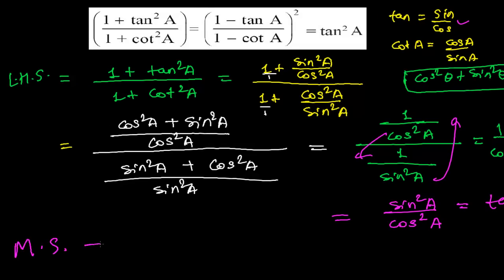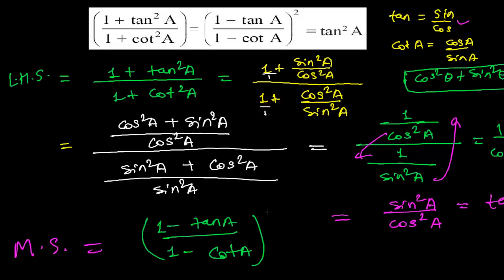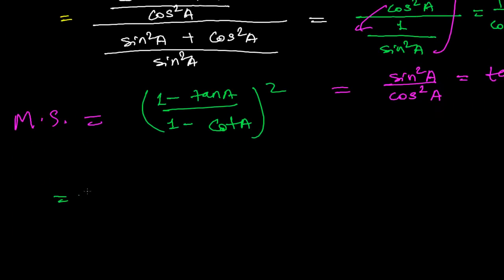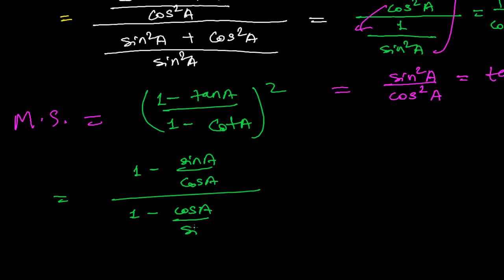Now let me solve the middle side. The middle side is 1 minus tan a divided by 1 minus cot a, whole square. Substituting the value of tan a as sin a upon cos a: it becomes 1 minus sin a upon cos a, whole squared, divided by 1 minus — cot a is cos a upon sin a — so 1 minus cos a upon sin a, whole square.